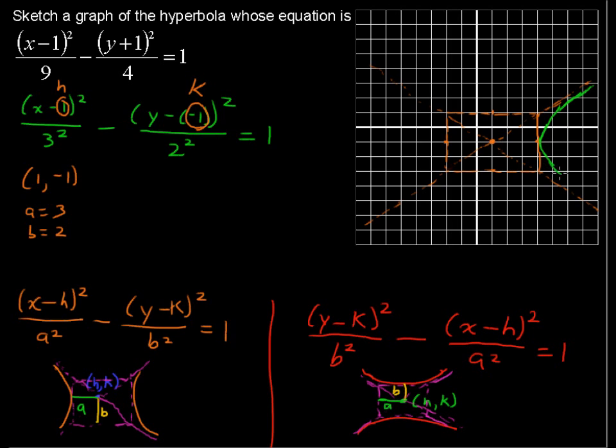And these orange lines are asymptotes, so we won't cross those but we will get very close to those. And now we've got this other part of the hyperbola going in this direction. It doesn't touch the asymptotes, it just gets very close.